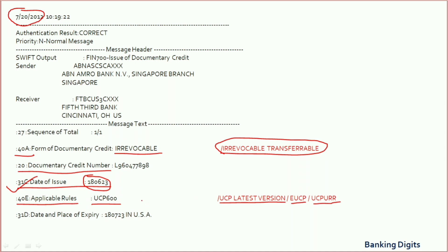Field 31D states the date and place of expiry. After this date, the LC will not be valid. 'Place of expiry' means the beneficiary needs to present the documents under LC to this place. Remember, the presentation must also meet the period of presentation mentioned in the LC, which we will discuss later in this video.